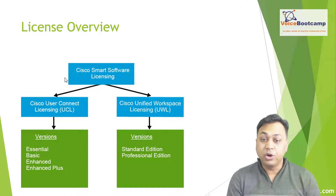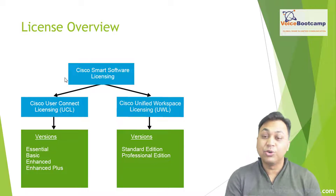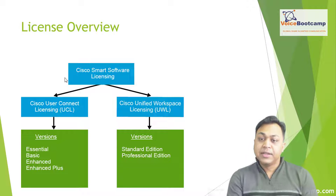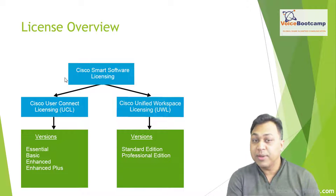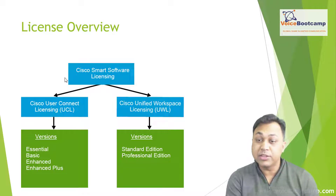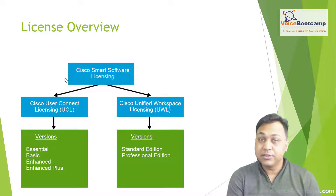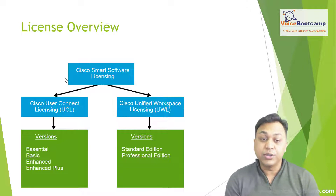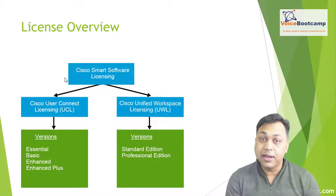Cisco Smart Software Licensing and Cisco Smart Software Manager provide management of an organization's license requirements. Cisco SSM provides a centralized method for applying, tracking, and managing licenses for Cisco Unified Communication Manager, Cisco Unity Connection, Emergency Responder, as well as the Management Edition of CUCM. Cisco SSM helps you automate many of the steps necessary to license users on the application server.